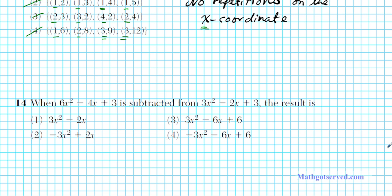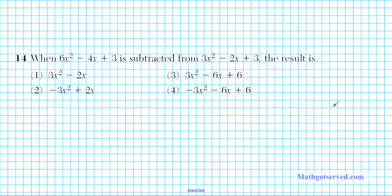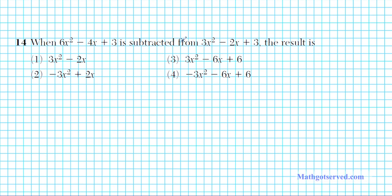Let's move on to question number 14. Question 14 says, 6x squared minus 4x plus 3 is subtracted from 3x squared minus 2x plus 3. The result is? So you want to pay real close attention to the order here. The way that it's written is not the way that you carry out the subtraction. Notice this is being taken out of that.